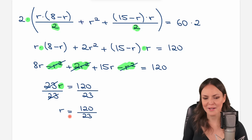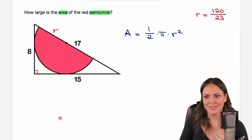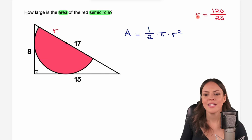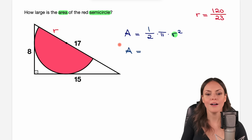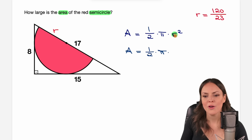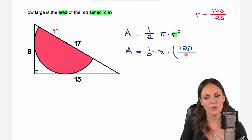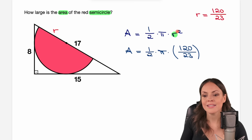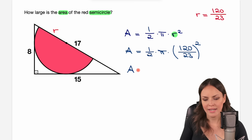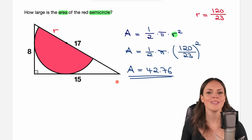We take this exact value of our radius and insert it into the formula for the area of the semicircle: one half times π times (120 over 23) squared. If you put this into a calculator, we get a result of approximately 42.76. And we've solved the problem.